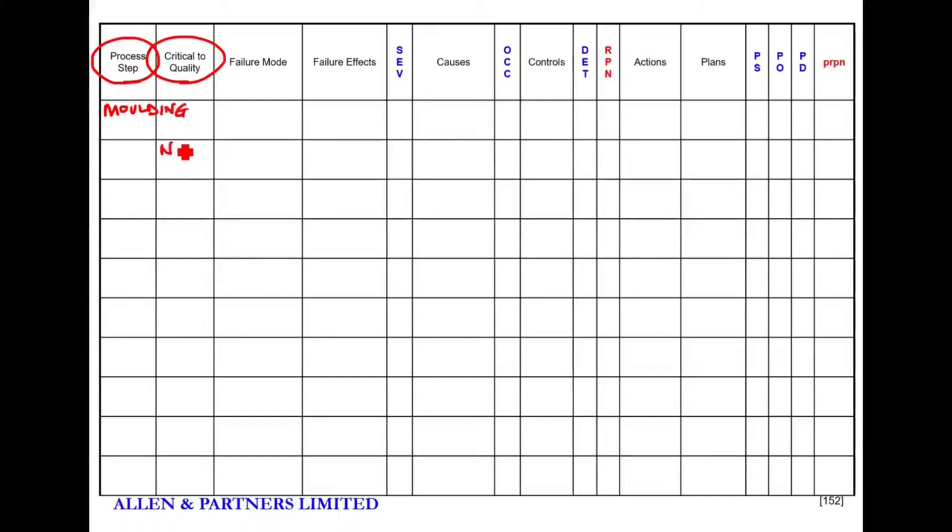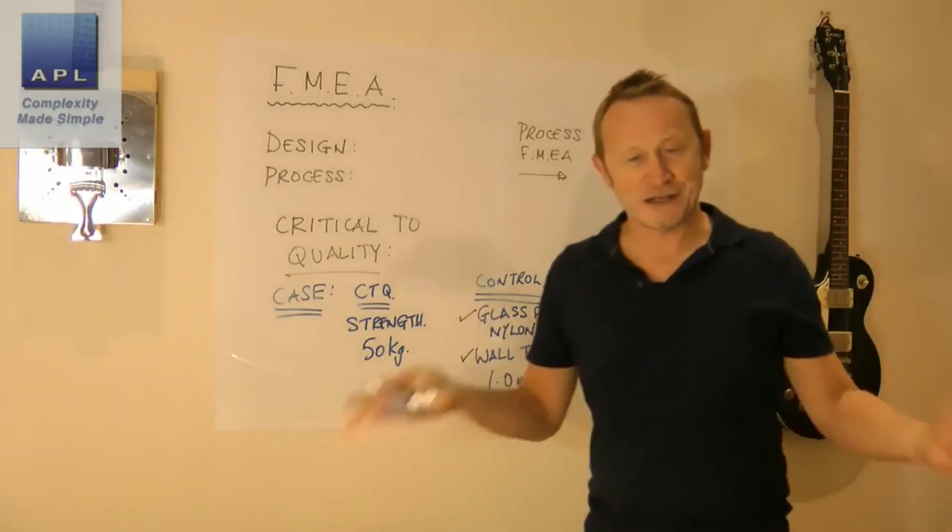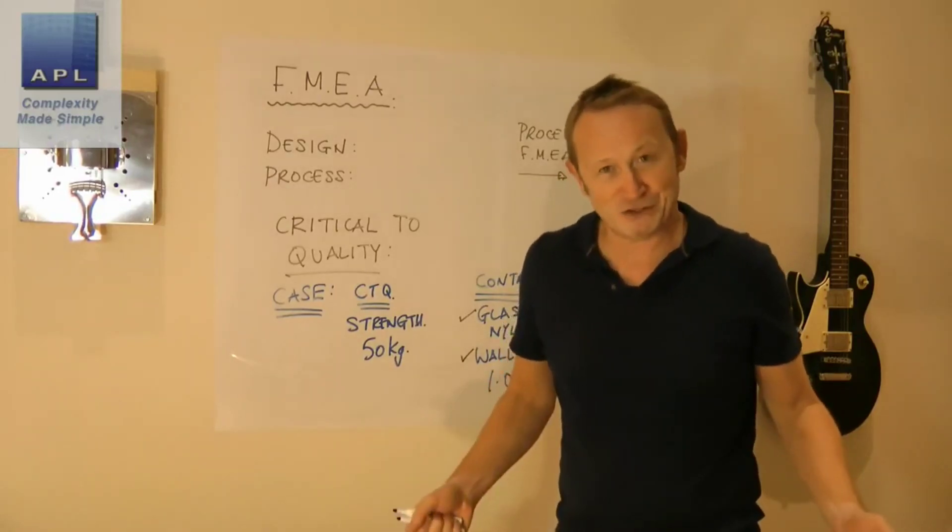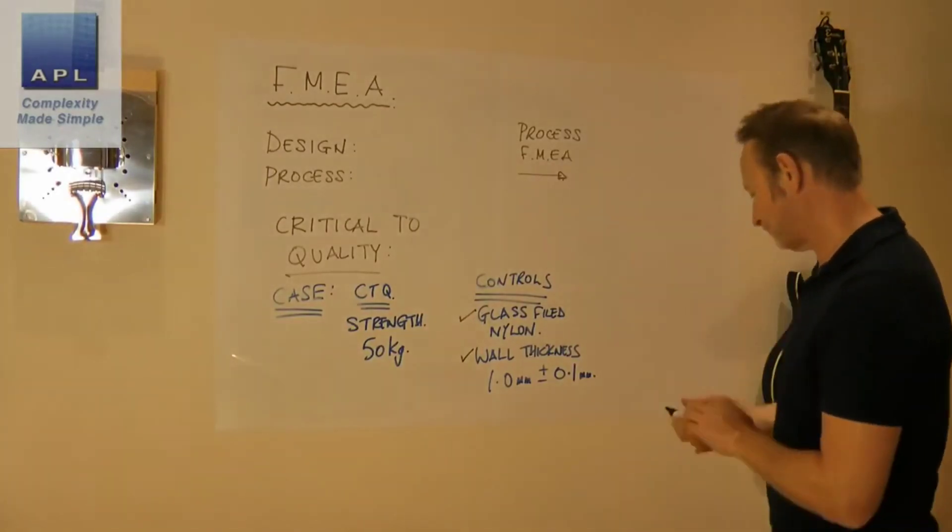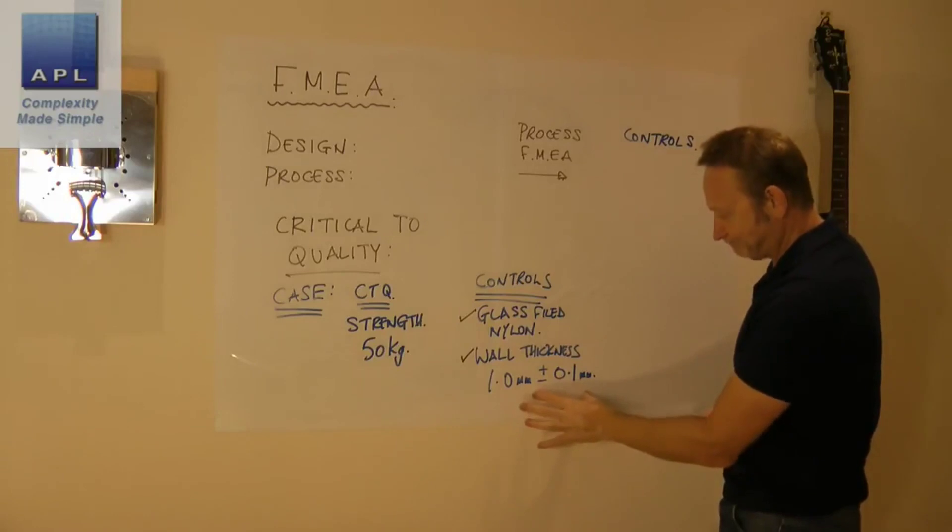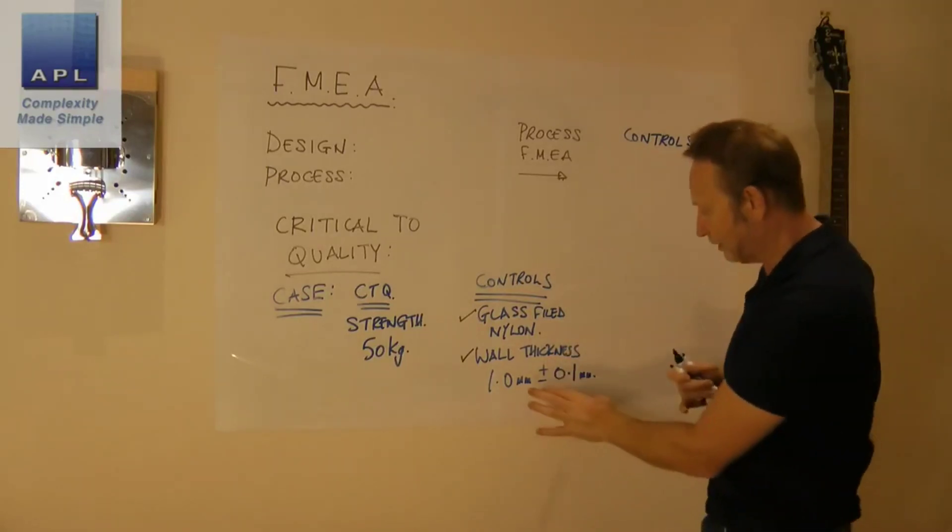Then next to it, it says 'What's critical to quality about this process step?' Well, if this process step was the injection molding stage of the production process, what would be critical to quality? Well, that we use glass-filled nylon and that the wall thickness is held to a particular size and a particular tolerance. Now what we're going to do is we're going to work across the Process FMEA, and again we're going to decide whether this is important or not. How do we decide if it's important? We can look right across the Design FMEA if we want to.